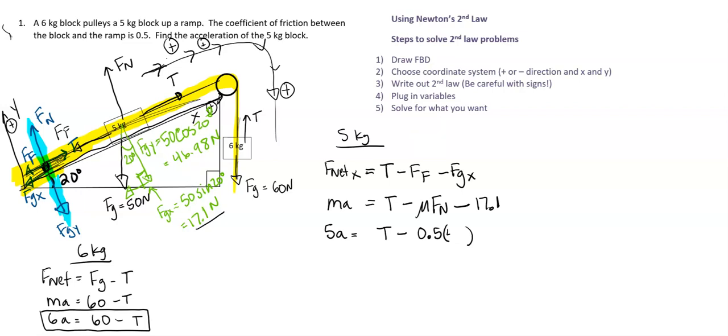So FN is going to be 46.98, which is what we got for FGY. Cool. So then minus 17.1. Okay.